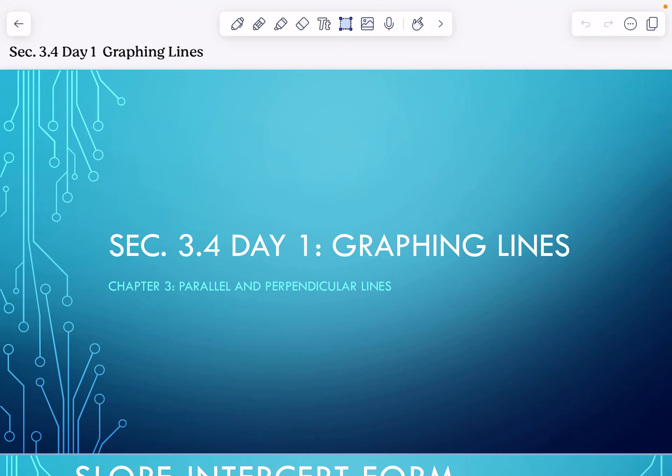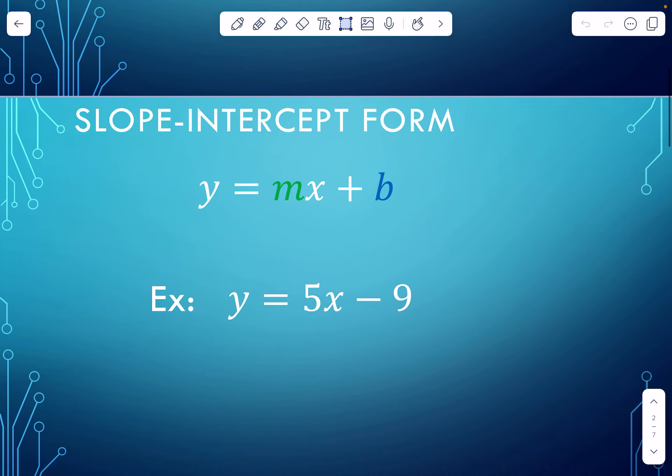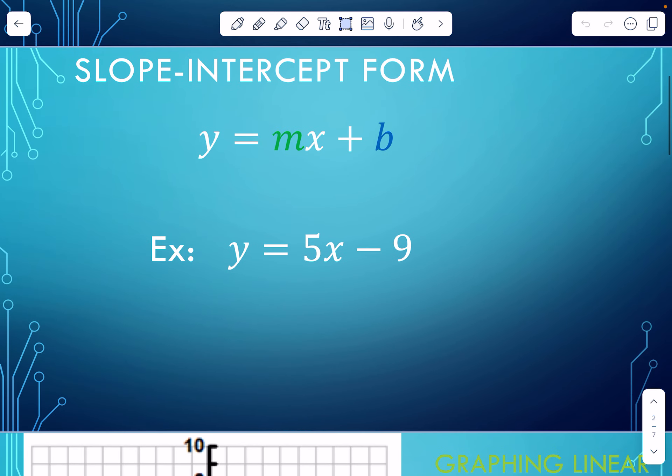Continuing into chapter three with parallel and perpendicular lines. Today we are going to talk about just a quick review of how we graph lines in slope intercept form and in standard form. So let's start with a quick review of slope intercept form.